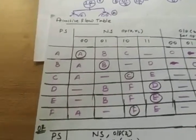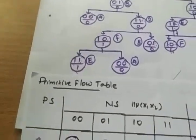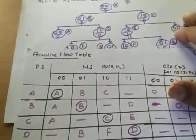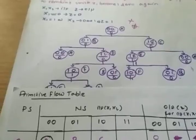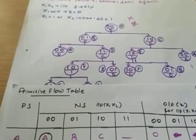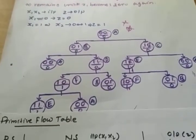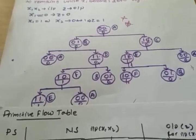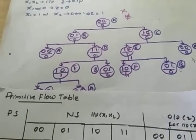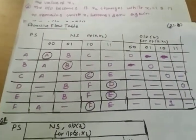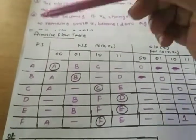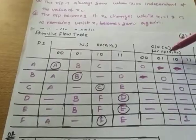Welcome to today's lecture. Today I will discuss the primitive flow table — how to draw the primitive flow table. This is already defined the flow chart, and from this flow chart I have to draw the primitive flow table. The primitive flow table is actually a table which has present state, next state, and output.